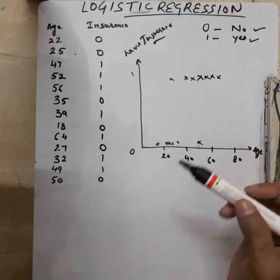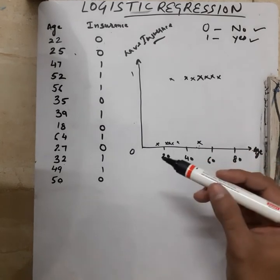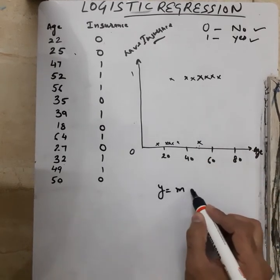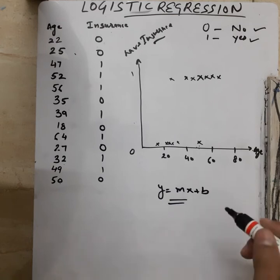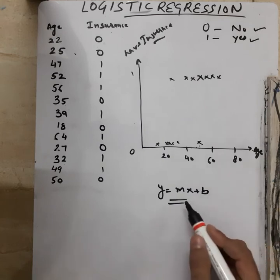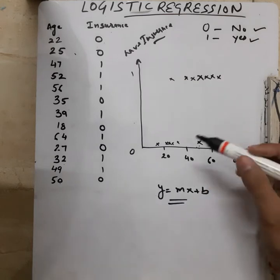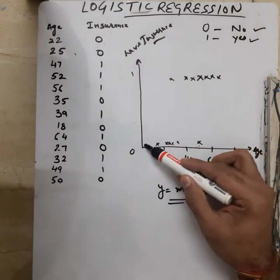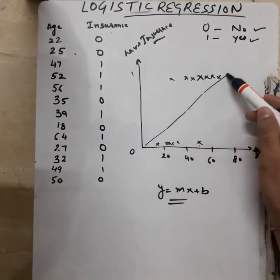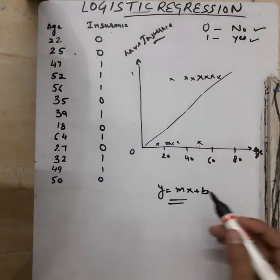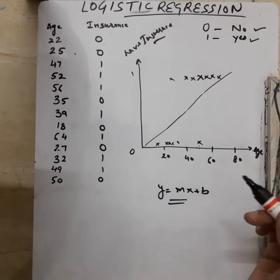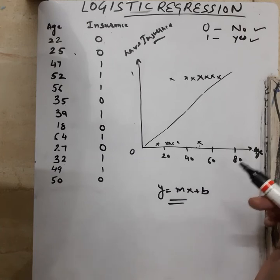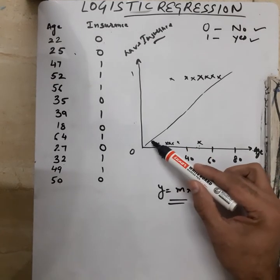Now assume this is how my data is scattered. If I have to plot a line using linear regression — y = mx + b — if you want a deeper look at how linear regression works conceptually and with Python code, you can check my previous videos in the same playlist. So if we use this equation here, the linear regression line comes out somewhere like this.